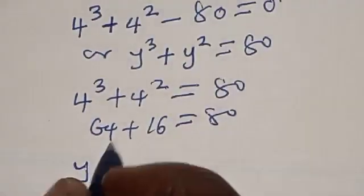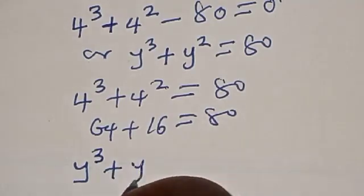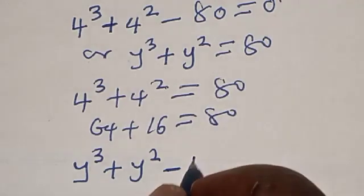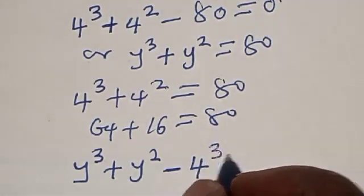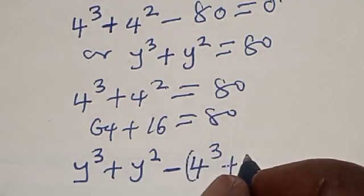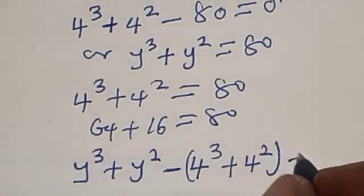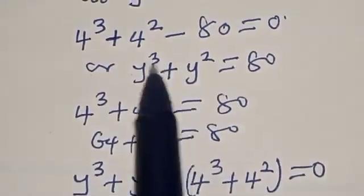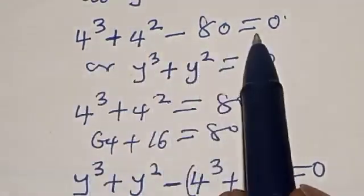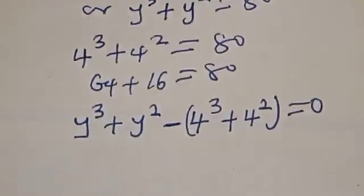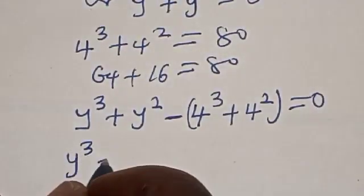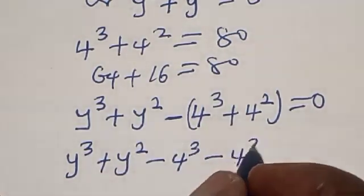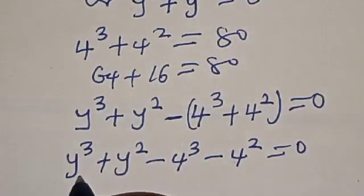Our equation becomes: y cubed plus y squared minus 4 cubed minus 4 squared is equal to zero, because 4 cubed plus 4 squared equals 80, and we have y cubed plus y squared minus 80 equals zero. So now we have y cubed plus y squared minus 4 cubed minus 4 squared equals zero.